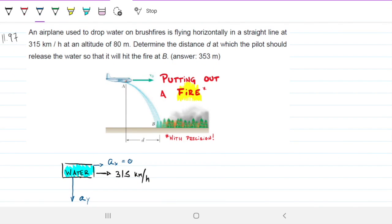Problem 11.97. An airplane used to drop water on bushfires is flying horizontally in a straight line at 315 kilometers per hour at an altitude of 80 meters. Determine the distance d at which the pilot should release the water so that it will hit the fire at b.